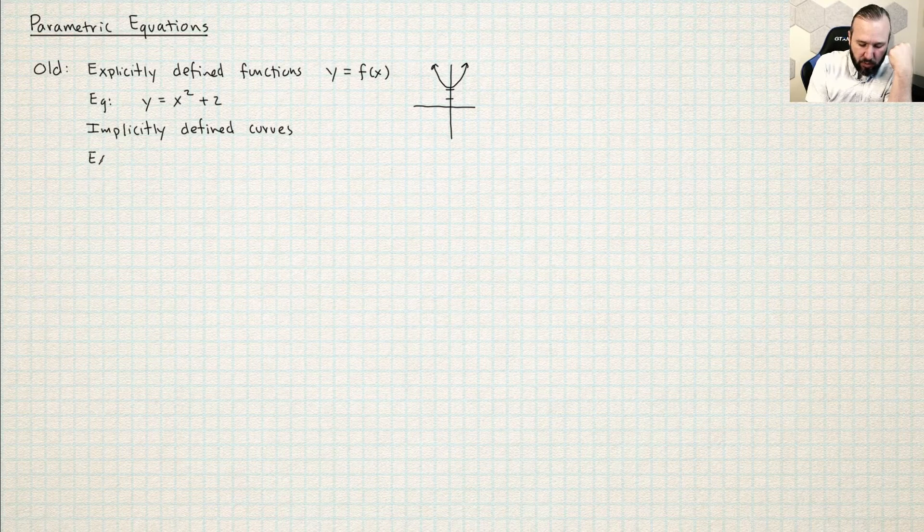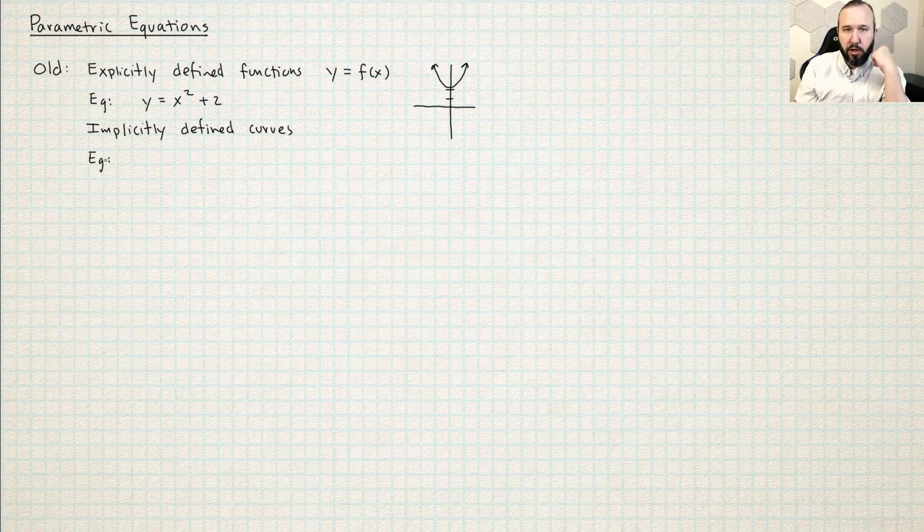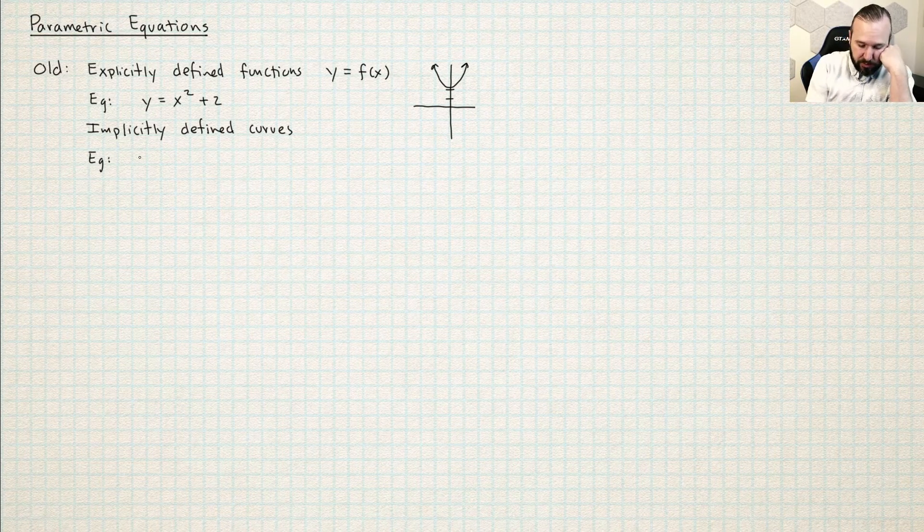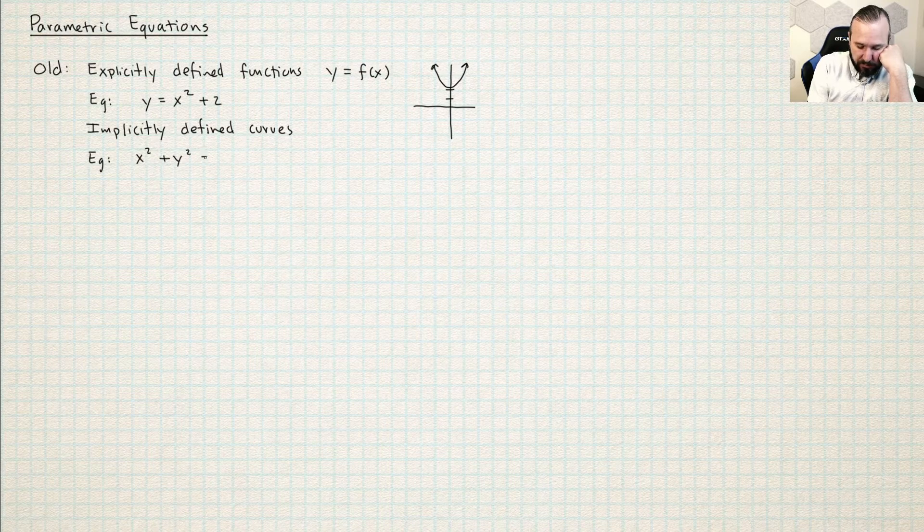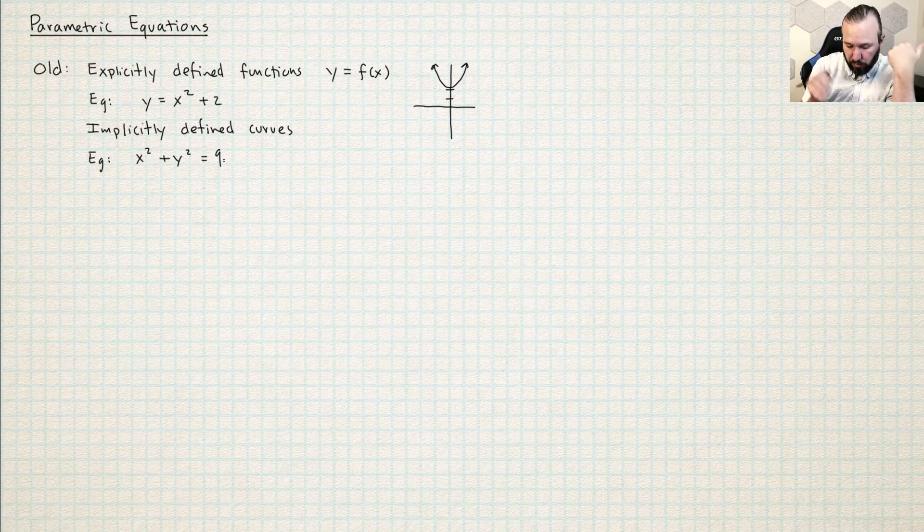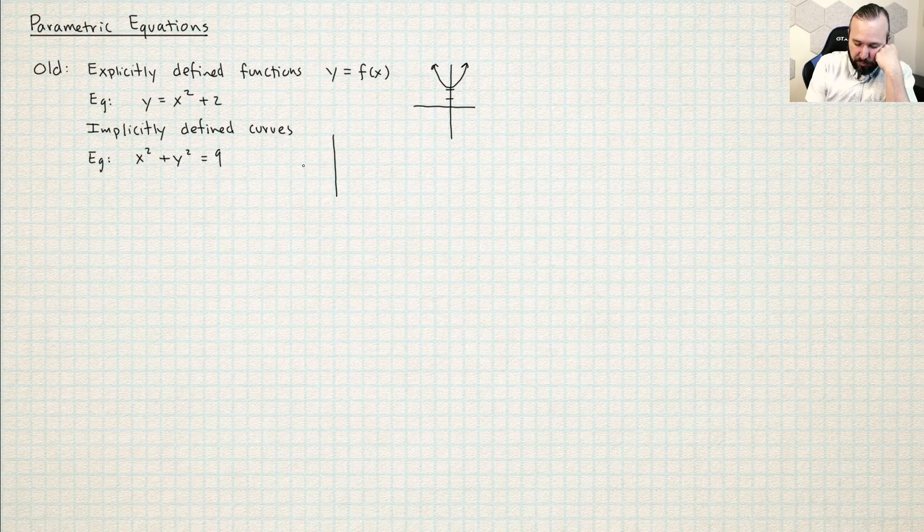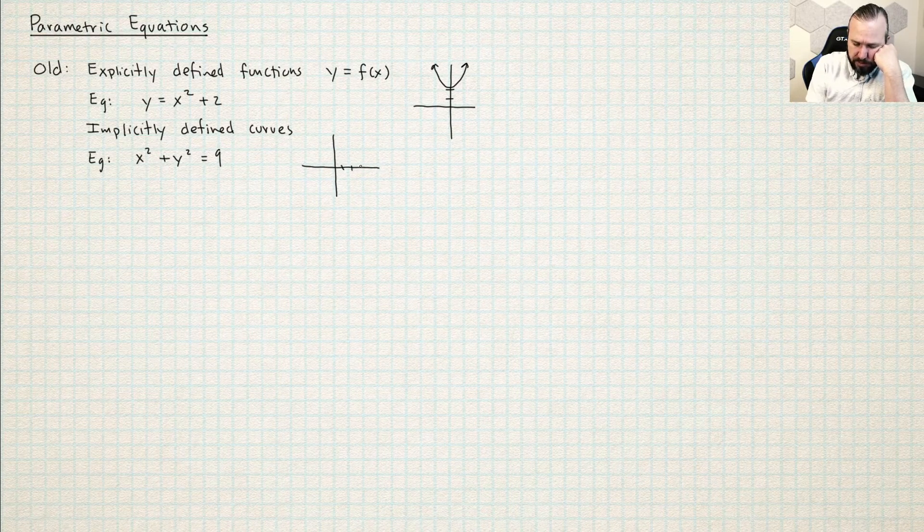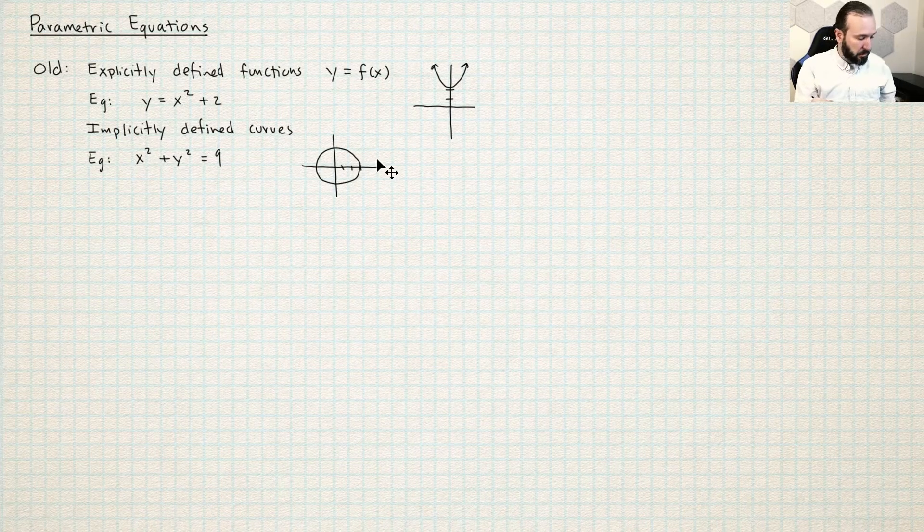And also we're pretty familiar with defining curves by using implicit equations. For example, most students at the calculus 3 level have seen the equation of a circle before. So here is an implicitly defined curve, x squared plus y squared equals 9. This is going to be a circle. Hopefully you can see that this is a circle of radius 3.